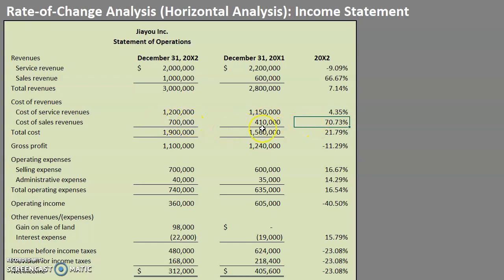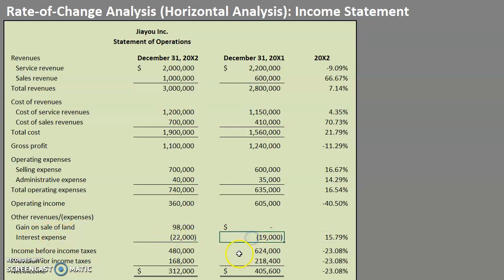One thing I want to caution you on: if you're doing this in Excel and you do have any parentheses — for example, notice that this went from $19,000 to $22,000 and it is in parentheses — that's just because it's an expense. Always check if it goes from a parentheses number to a positive. In this case, interest expense went from $19,000 to $22,000, so it is an increase.